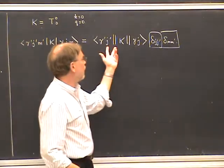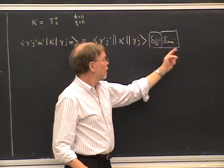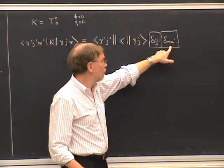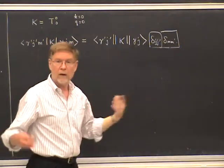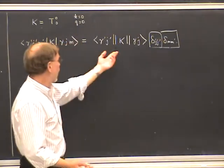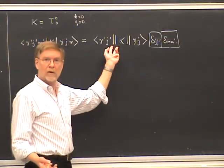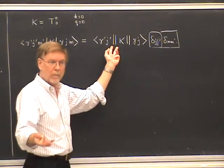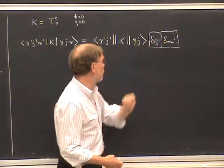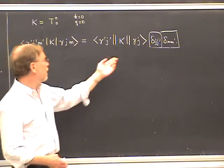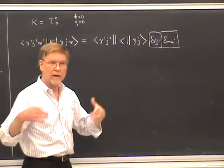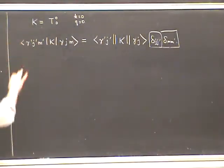You can view this as a matrix in the magnetic quantum numbers. To say it's proportional to the Kronecker delta means the matrix is diagonal. But more than that, all the diagonal elements are equal — so in fact it's a multiple of the identity matrix as far as the magnetic quantum numbers are concerned. Physically, for Hamiltonians, this means the energy doesn't depend on the orientation of the system.